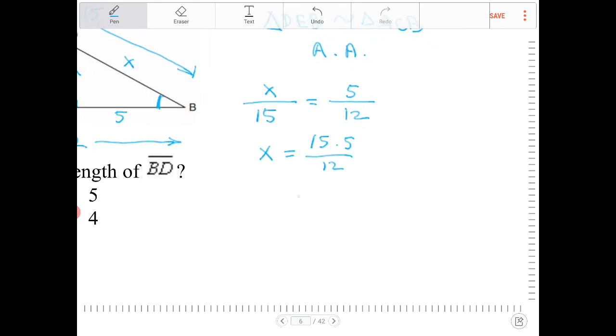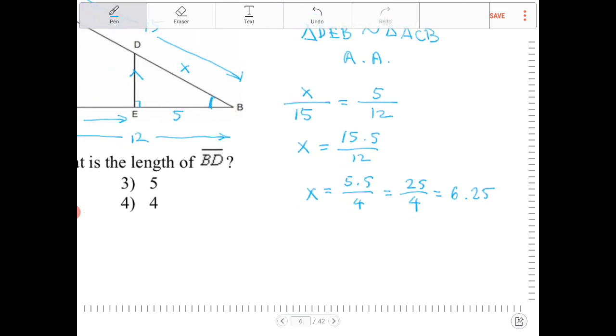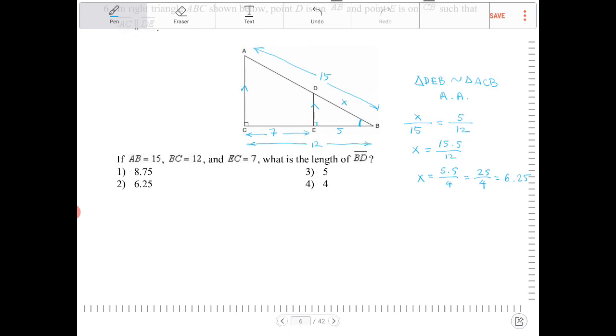So this will be 5 times 5 over 4, so that's 25 fourths, and that is also equivalent to 6 and 1/4, or 6.25, and that is option 2.